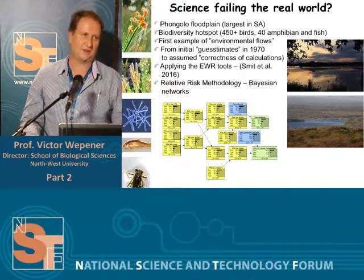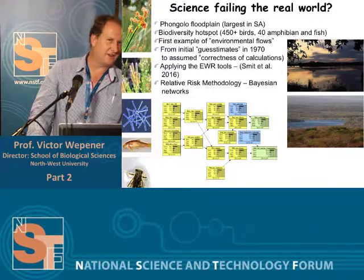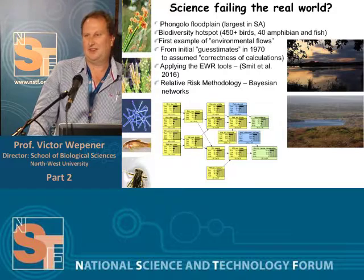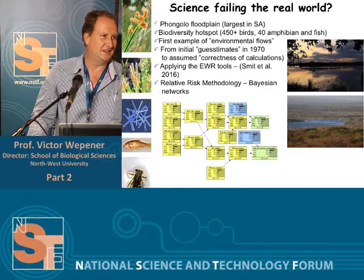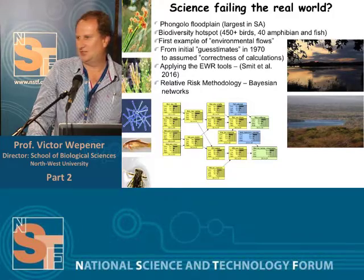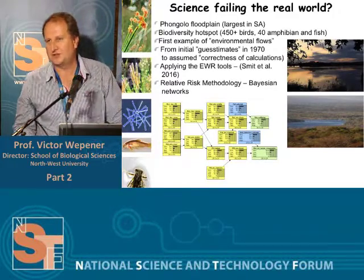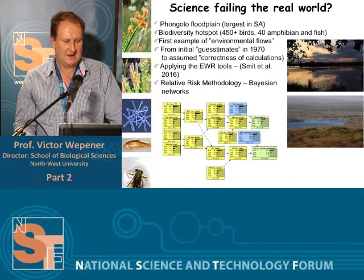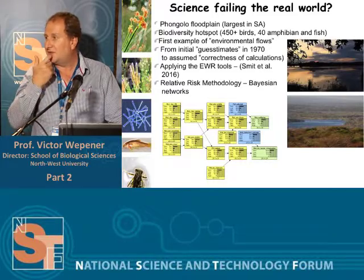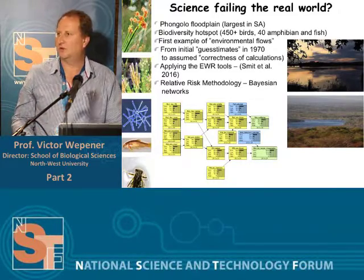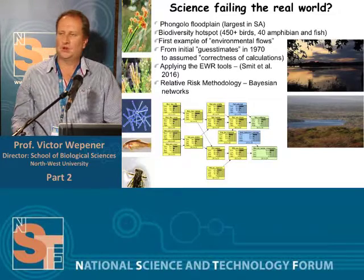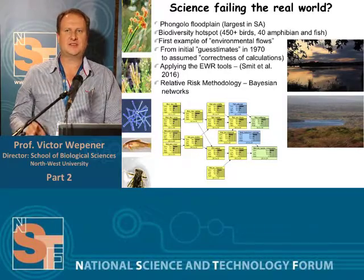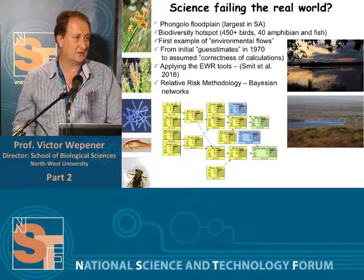The Pongola floodplain is the largest floodplain in South Africa. It's also a biodiversity hotspot, with a very high number of bird species, the greatest amphibian diversity in South Africa, and the greatest fish diversity in South Africa. In the early 1970s, before the construction of the Pongola Dam, it was seen as one of the earliest case studies of setting environmental flows in South Africa.